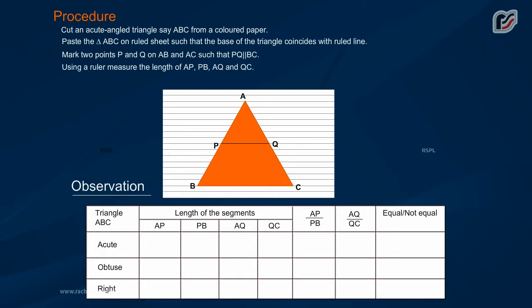Observation: Triangle ABC. Length of the segments: AP by PB, AQ by QC, equal or not equal.